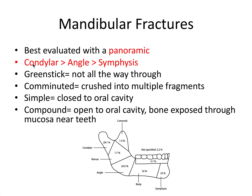In order of frequency, condylar fractures are most common, followed by angle fractures — those are at or near the gonial angle of the mandible between the body and the ramus — and then symphysis fractures. These are generally the three most common mandibular fractures we see.